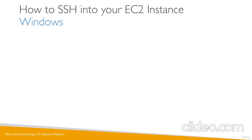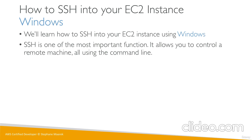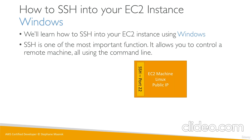Now we're going to learn how to SSH into our EC2 instance using Windows. SSH is one of the most important functions when you deal with Amazon Cloud — it allows you to control a machine remotely using the command line. We have our EC2 machine running Amazon Linux 2 with a public IP, and we had an SSH security group allowing port 22 to any IP.